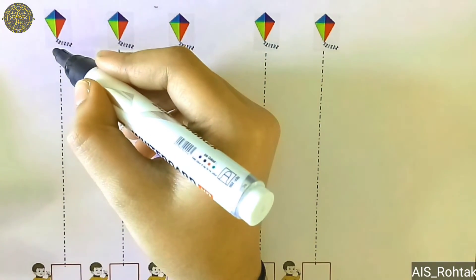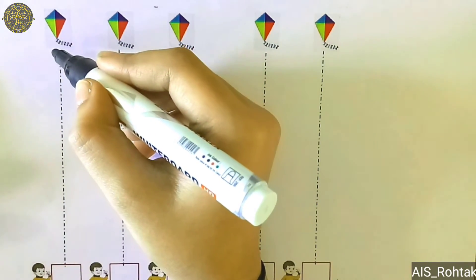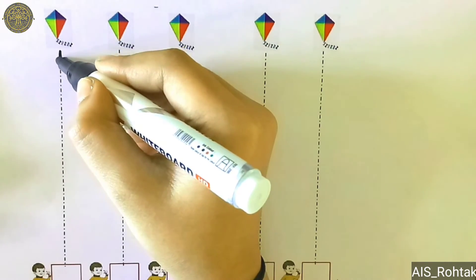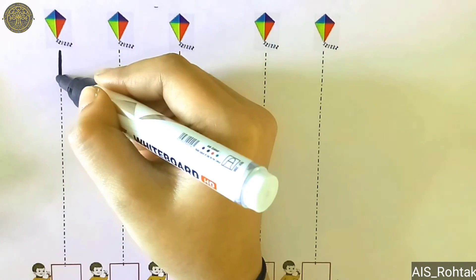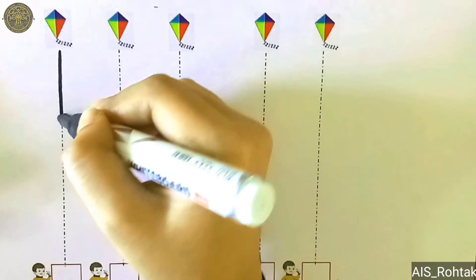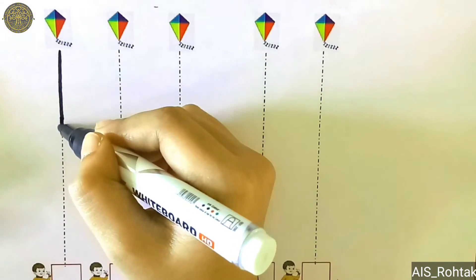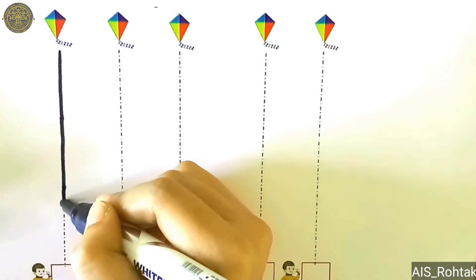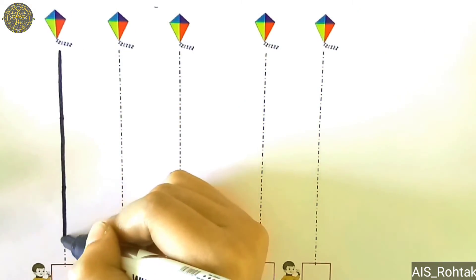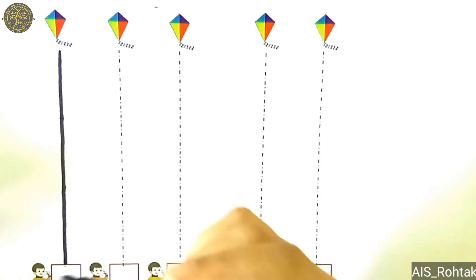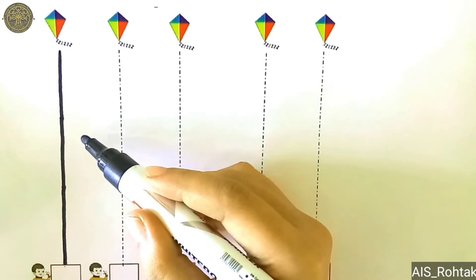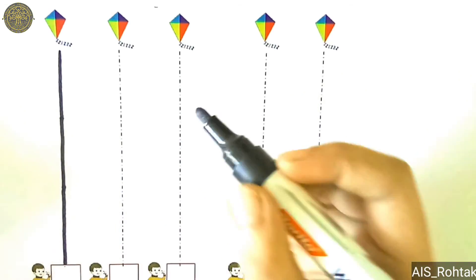Start from up. Go down, down, down, down, down and down. This is my standing line. Let's do it again.